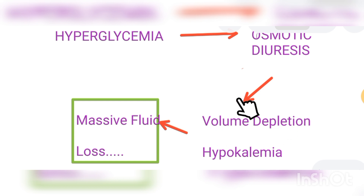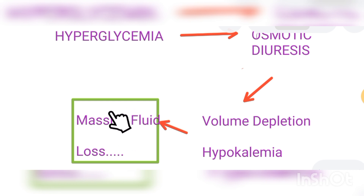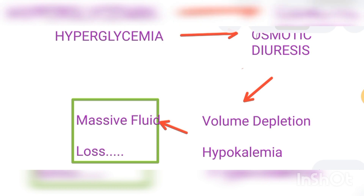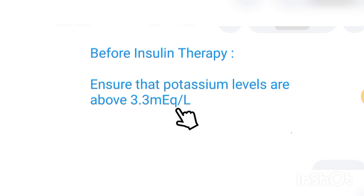This osmotic diuresis leads to massive fluid loss, and that is why we have fluid therapy first — so that we can try to replace the fluids that have been lost. The fluid loss goes with loss of ions such as potassium ions, leading to hypokalemia. Before insulin therapy, you need to ensure that potassium levels are above 3.3 milliequivalents per liter.